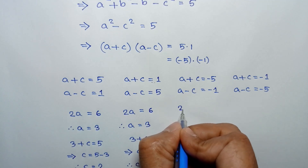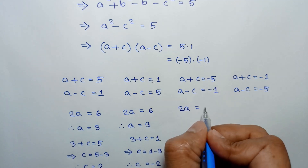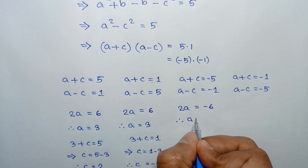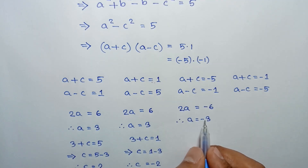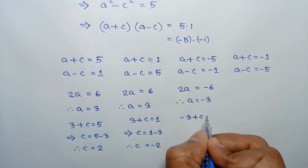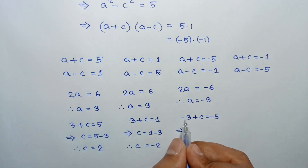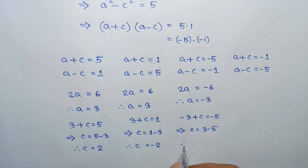For Case 3, adding a plus c equals negative 5 and a minus c equals negative 1: the c terms cancel, giving 2a equals negative 6, so a equals negative 3. Substituting a equals negative 3 into a plus c equals negative 5, we get c equals negative 5 plus 3, so c equals negative 2.